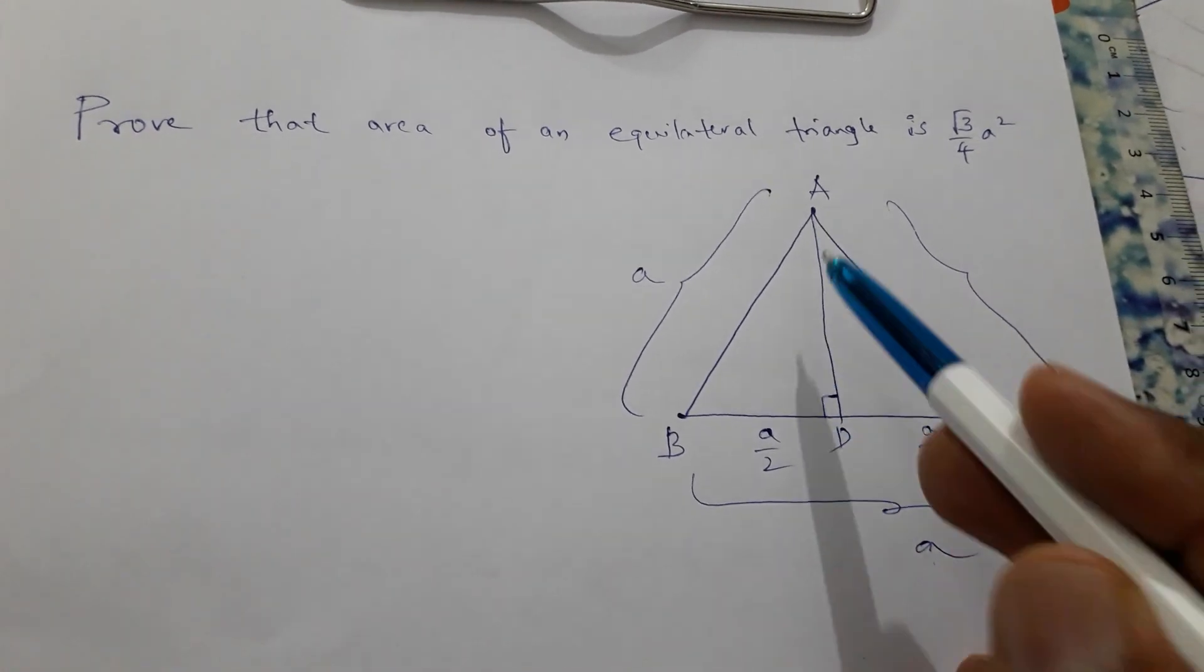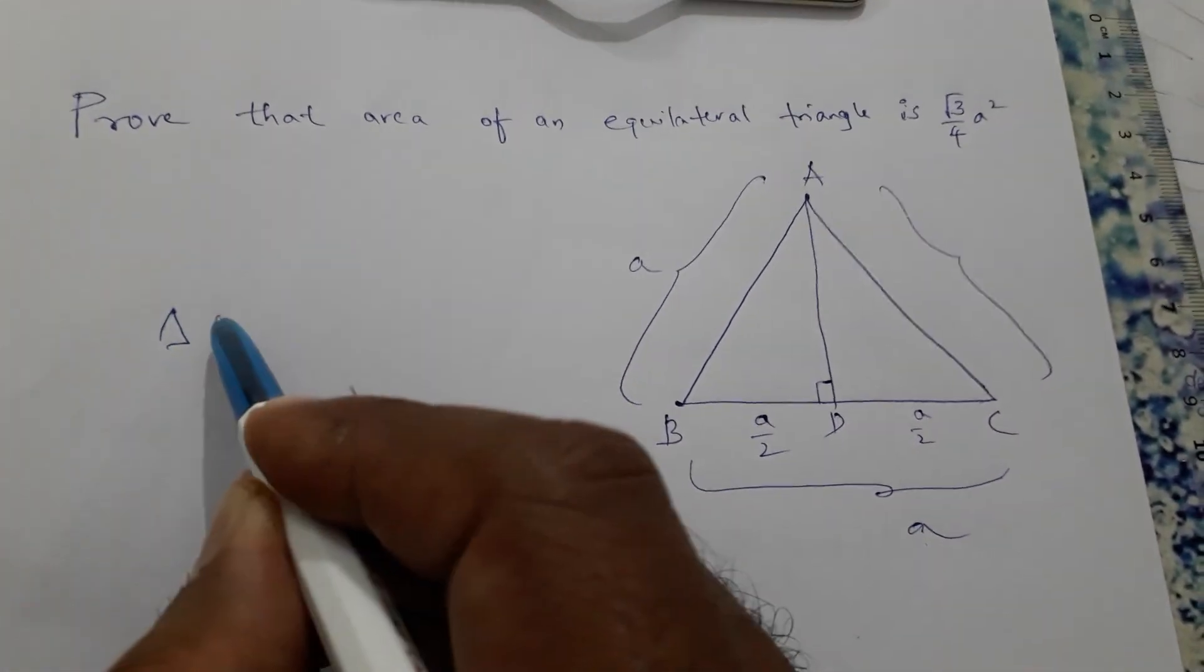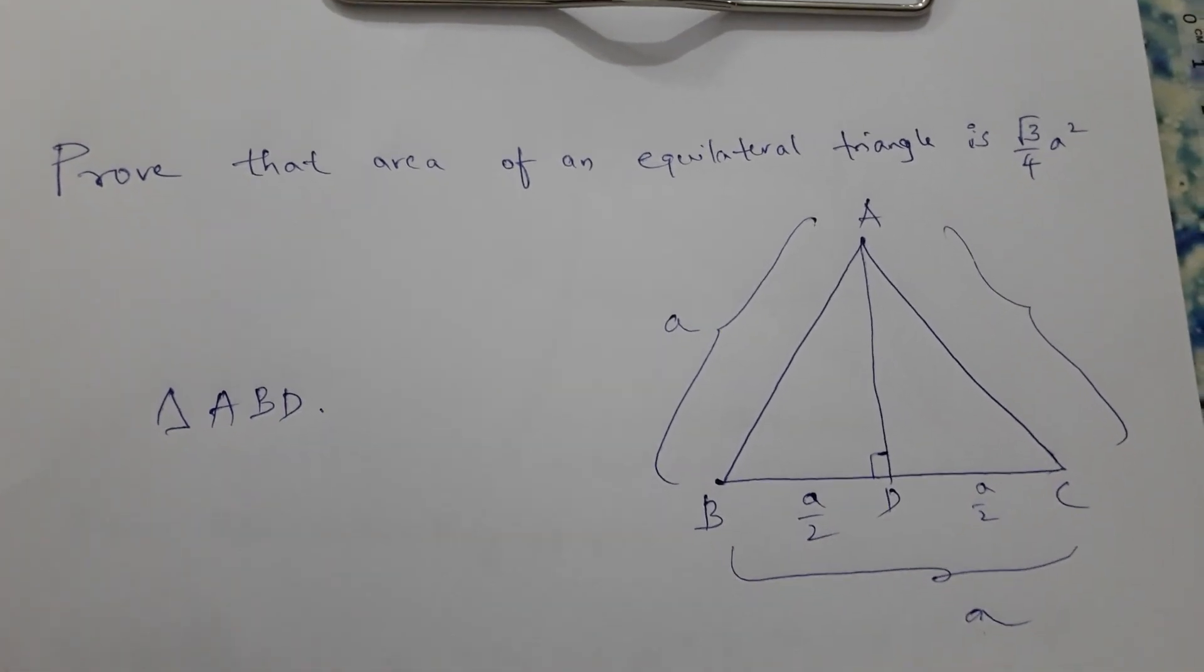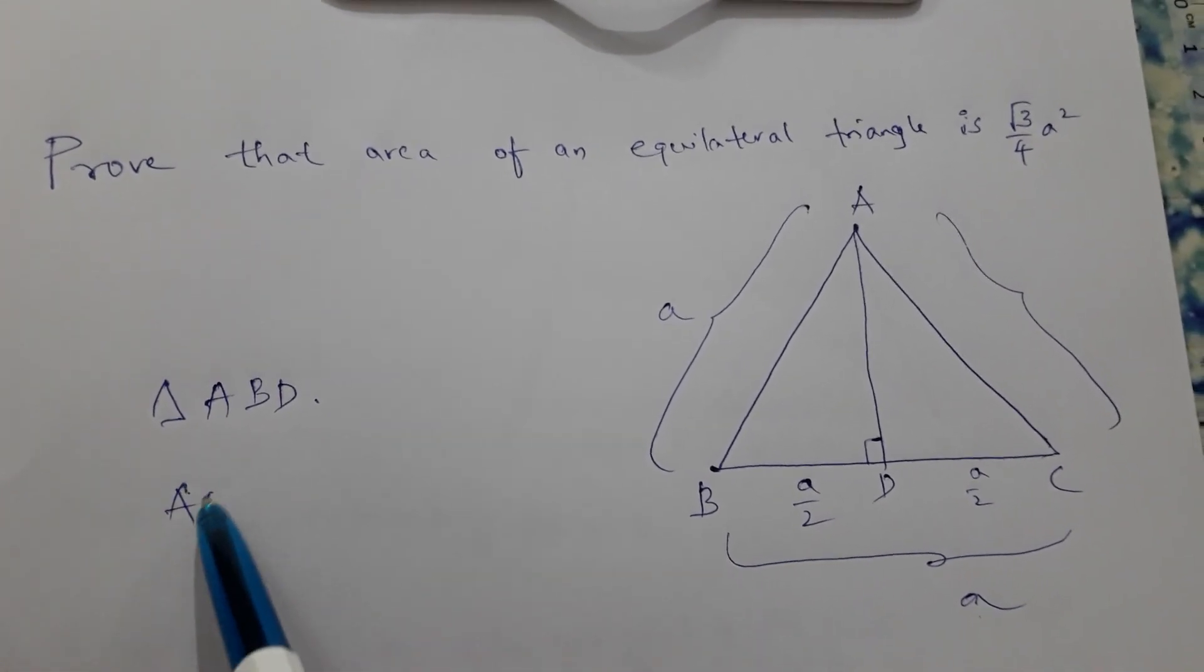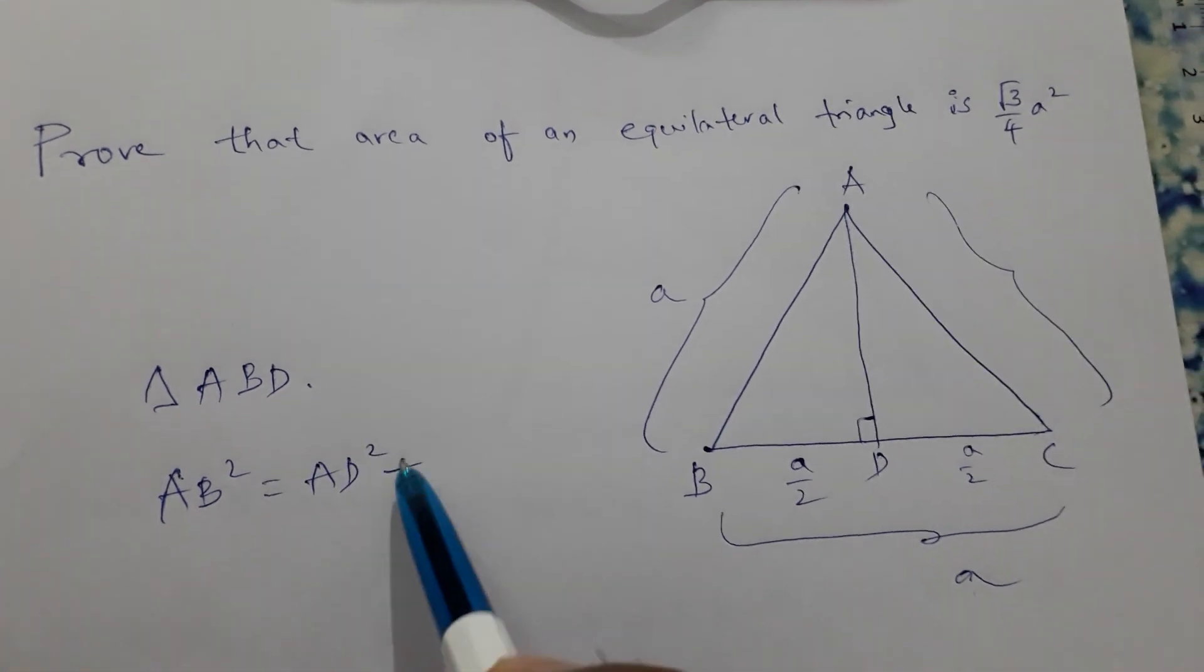First find altitude. Apply Pythagorean theorem for triangle ABD. If you apply Pythagorean theorem, hypotenuse squared is equal to sum of the squares of other two sides.